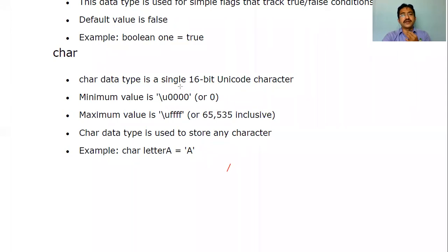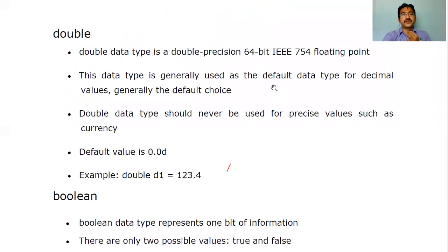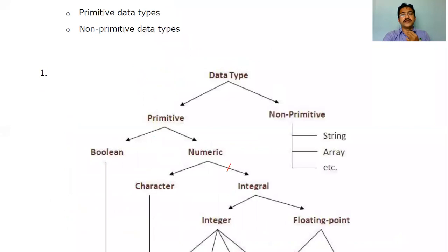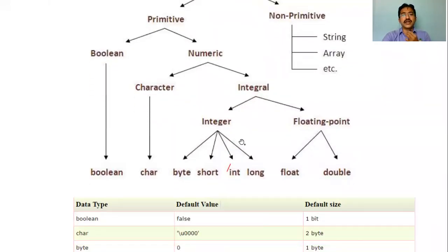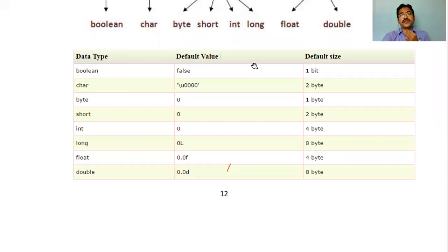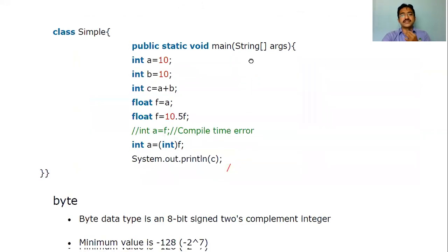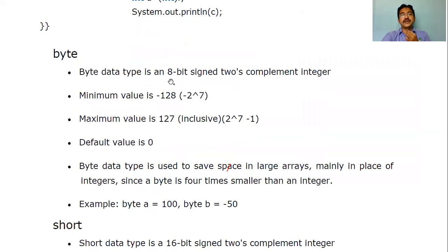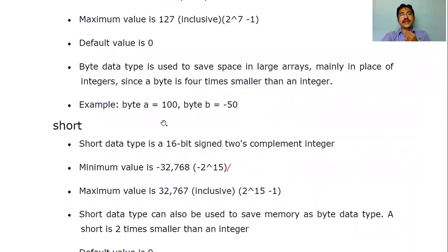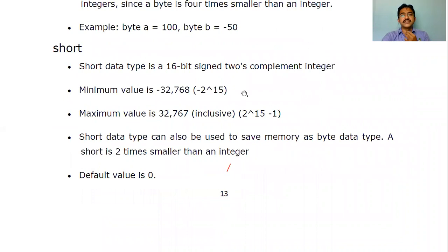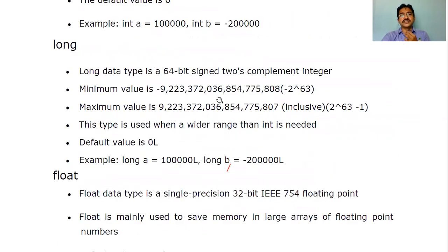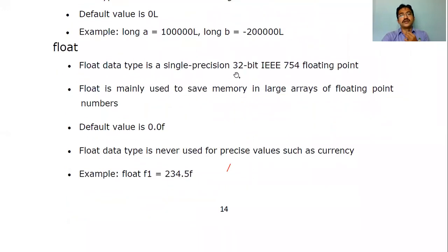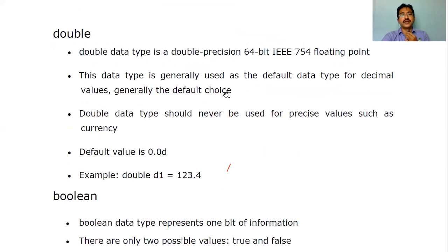So those are all the data types we have covered. In this concept, we have seen the different data types — primitive and non-primitive — how primitive is categorized, and all eight data types with their type values and default sizes. For every data type, we have seen the actual size, the range, the default value, and how they are initialized — including byte, short, int, long, float, double, boolean, and char. That's about the data types in Java.